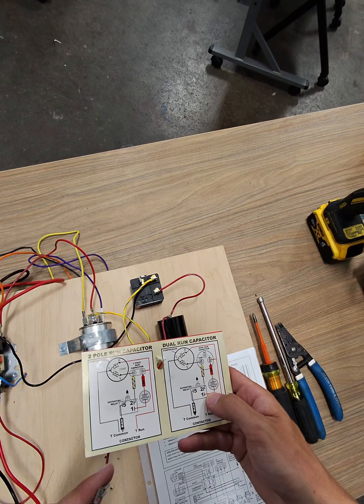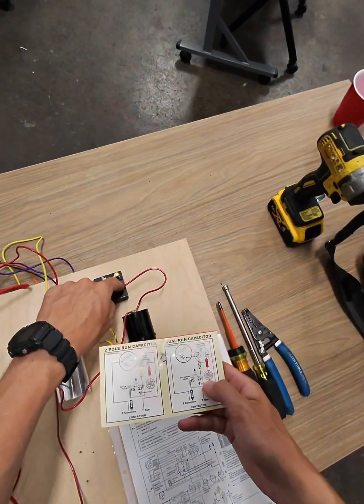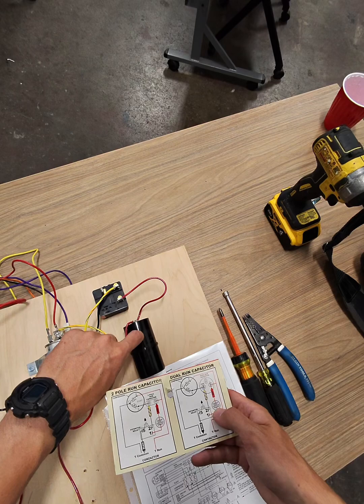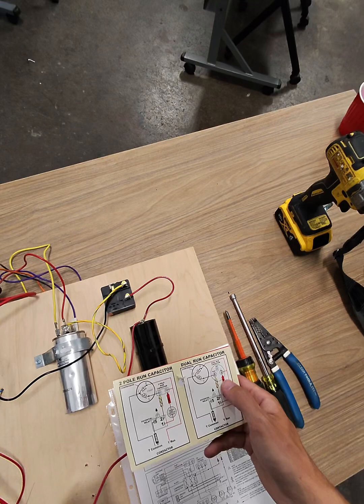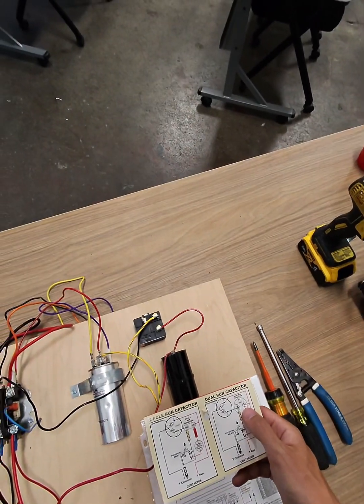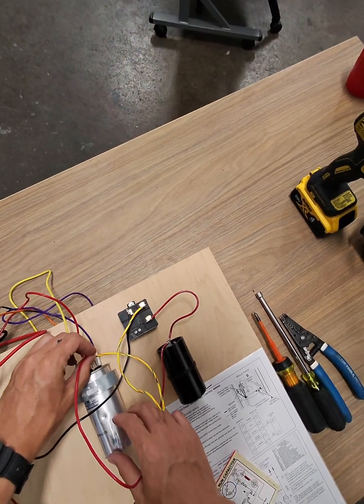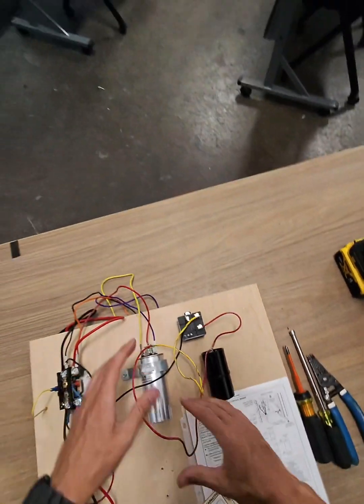And our last wire is the red wire, which will go, well, there's one red wire that goes to the start capacitor on the hard start kit. And then the other red wire will continue on to the common on the dual-capacitor. Boom.